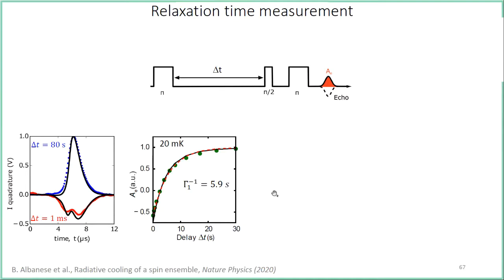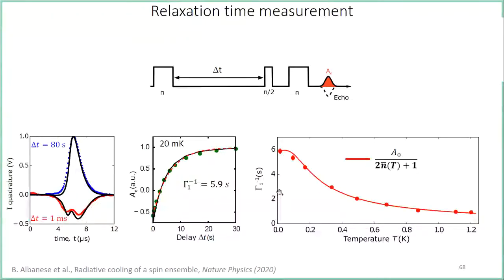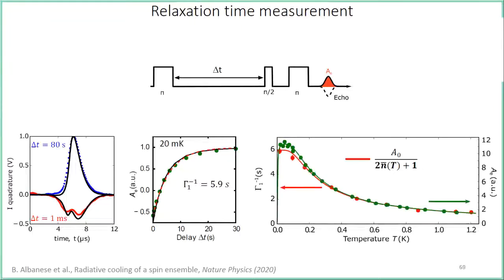We repeat this measurement as a function of temperature. The spin relaxation time follows the 2n+1 law very well, confirming our spins are in the Purcell regime from 20 millikelvin up to at least 1.2 kelvin. We also measure the polarization temperature dependence: the data coincides very well with the 2n+1 law, with a slight deviation at lower temperatures because we are not measuring a simple spin-1/2 but a 20-level system. At high temperature the two coincide. So we can now proceed to the radiative cooling experiment.